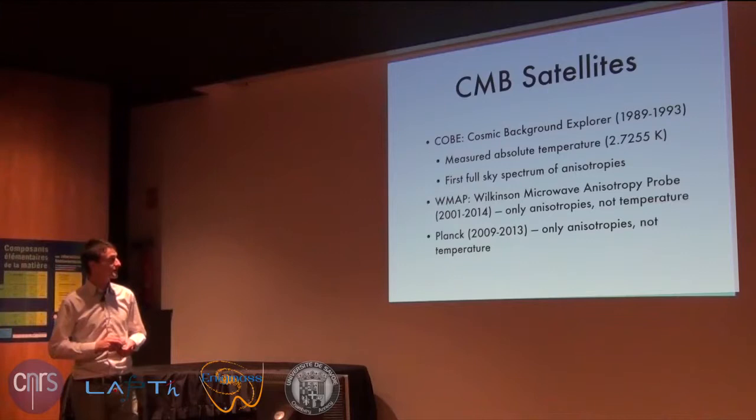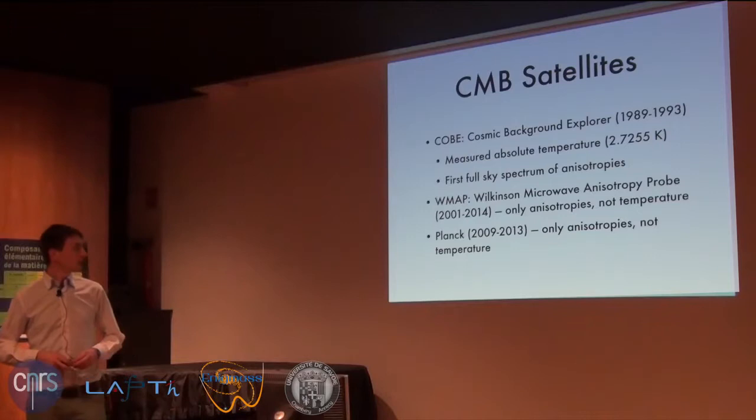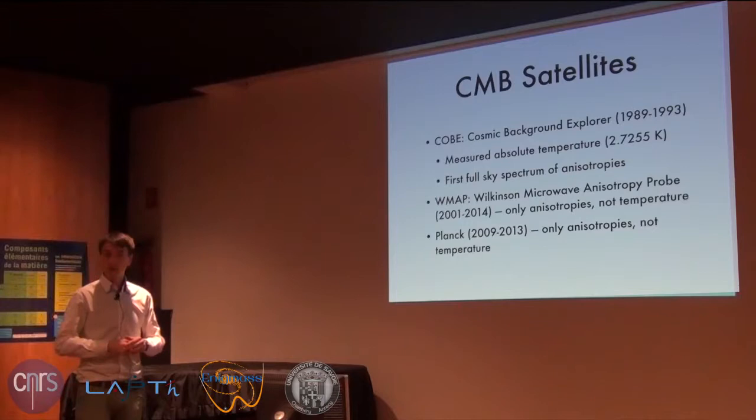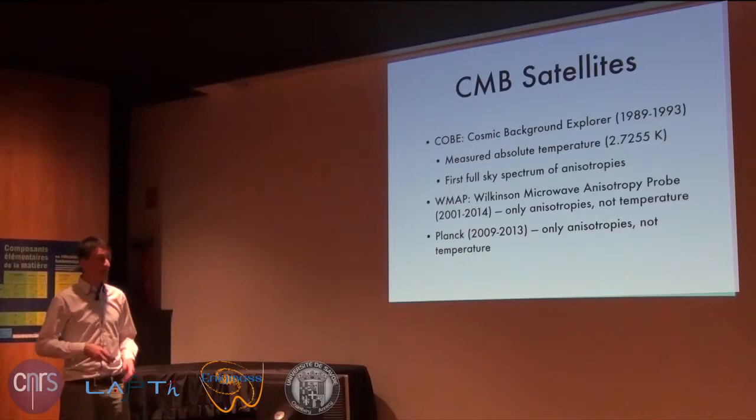The temperature in every direction has the value 2.7255 Kelvin, but the digits beyond that vary in different directions of the universe — these tiny fluctuations in temperature are a very important source of information in cosmology. After COBE, the WMAP satellite was launched as a microwave anisotropy probe. WMAP did not measure the absolute temperature; it only measured the difference in temperatures in two different directions, repeating that over the full sky. So COBE remains the only satellite that measured the absolute temperature of the CMB on the full sky.